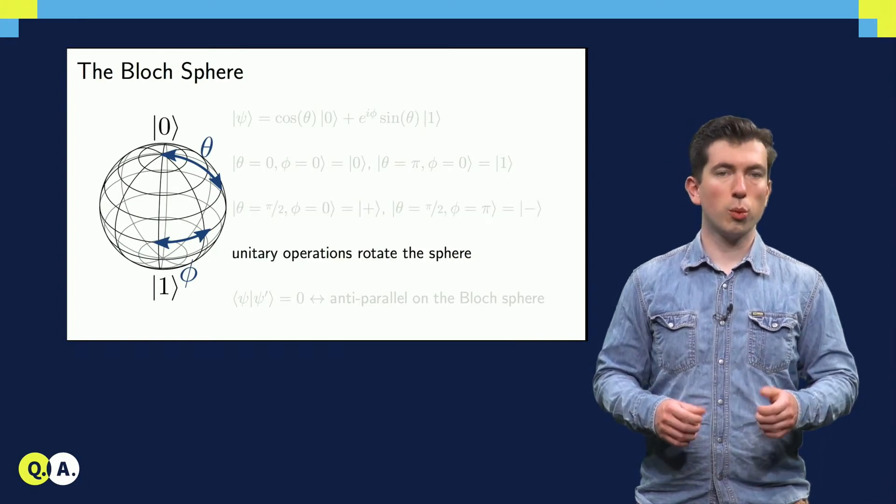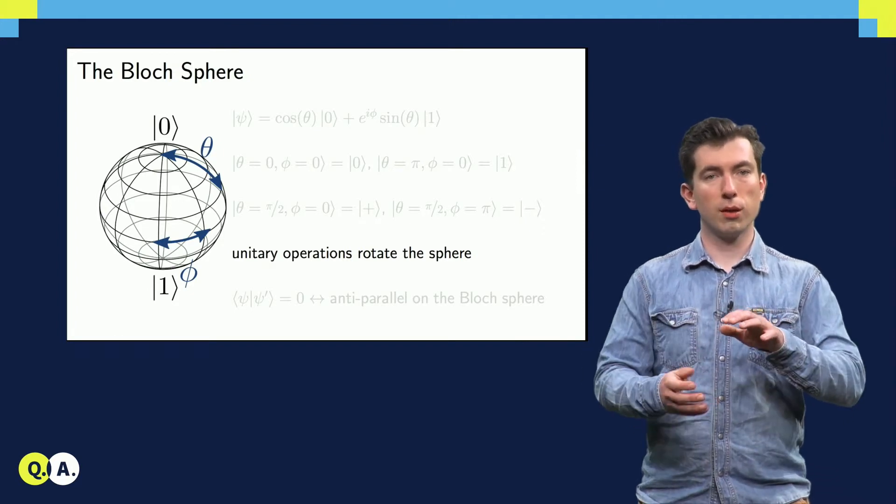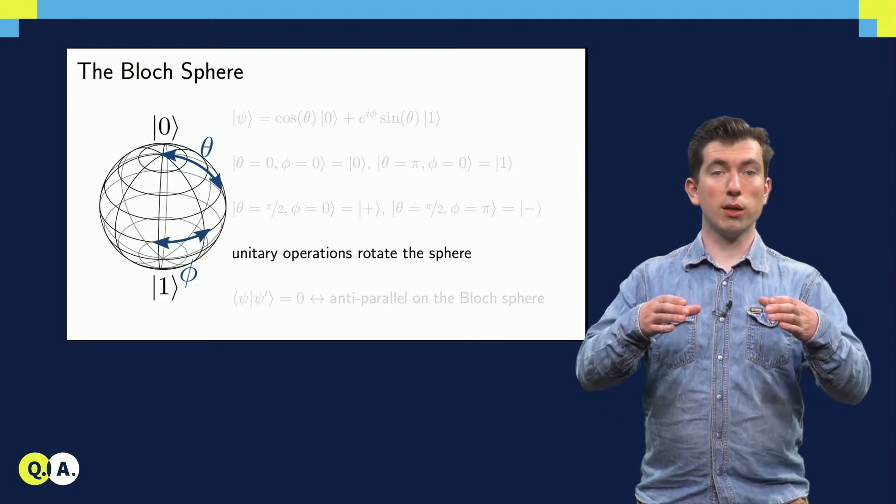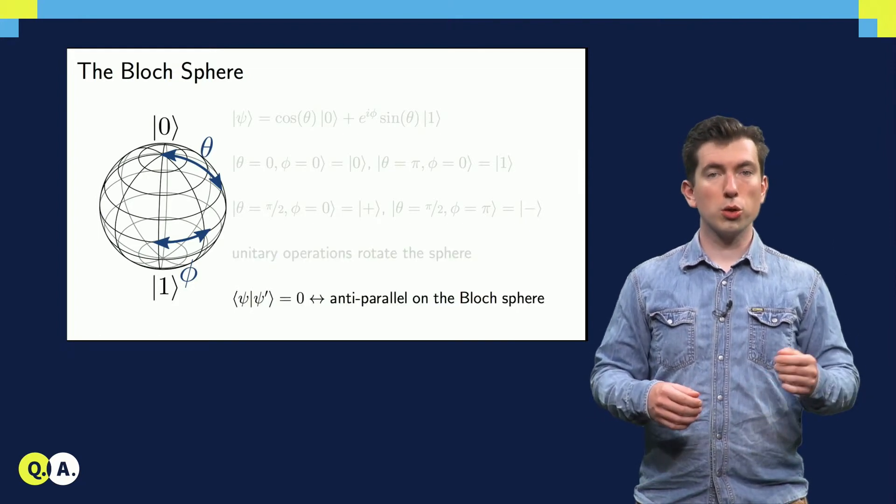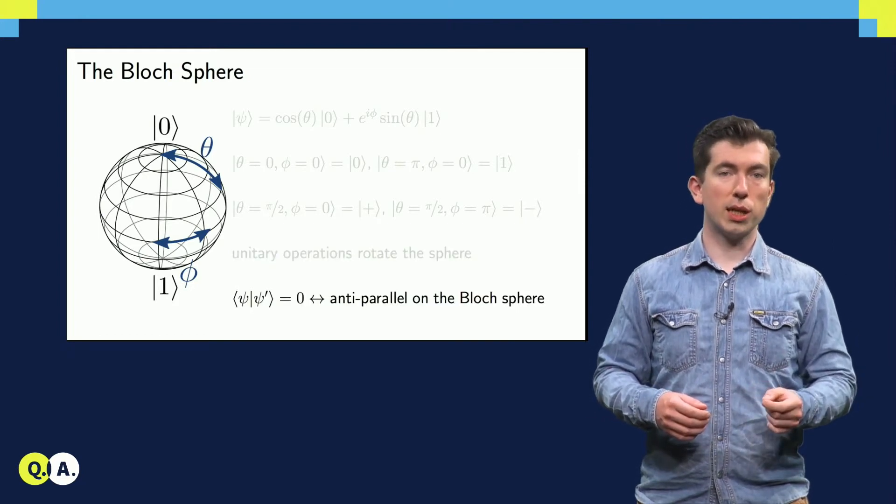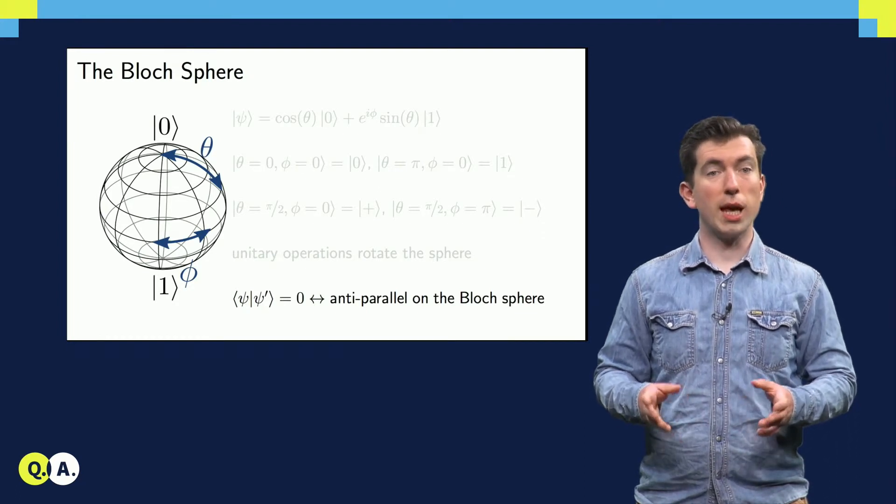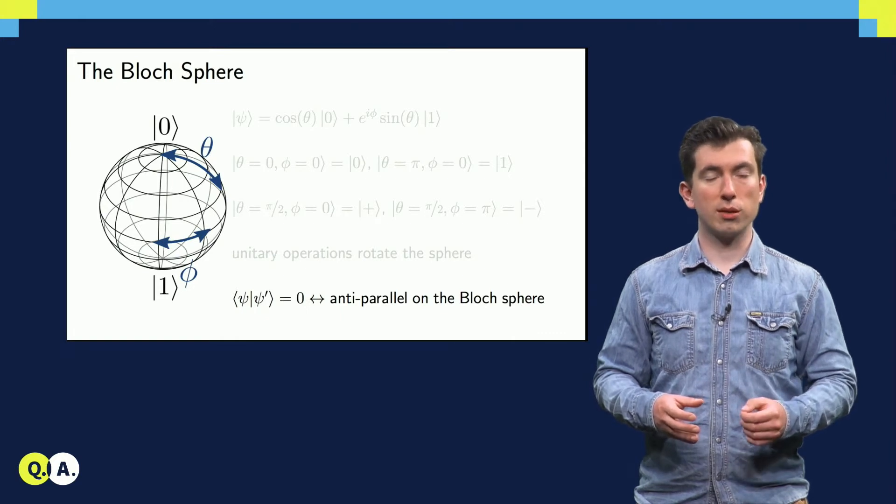Unitary operations, which change the basis we're working in, effectively rotate the sphere. For example, the Hadamard operation from earlier rotates the plus-minus states on the equator by 90 degrees until they're at the poles. Also note that the states on opposite sides of the sphere are actually orthogonal, so this mapping does not preserve the angle between states, but is still useful for describing single-qubit states and operations.